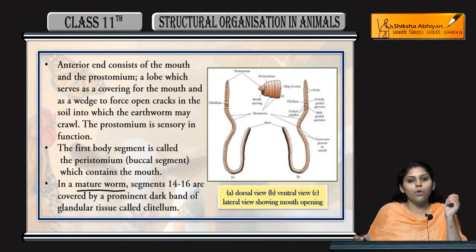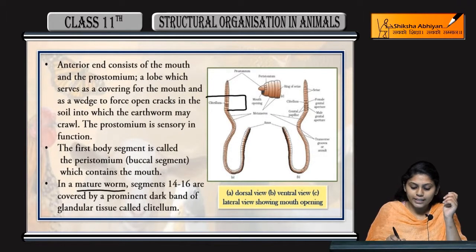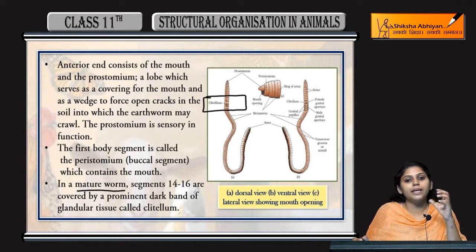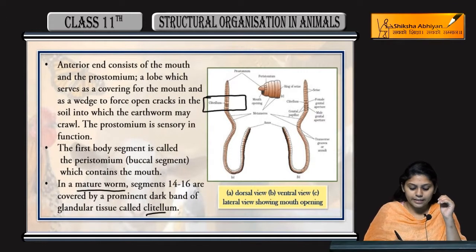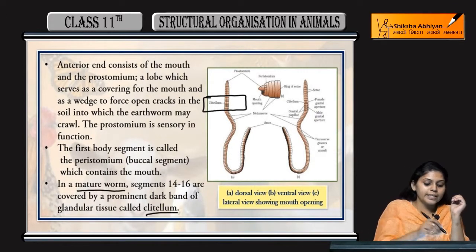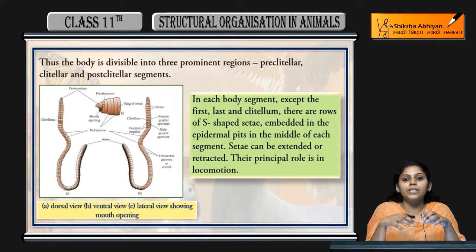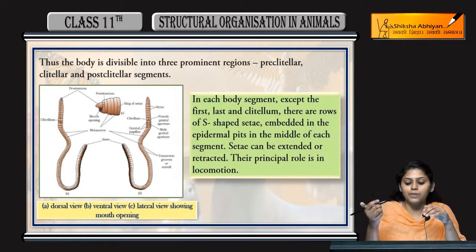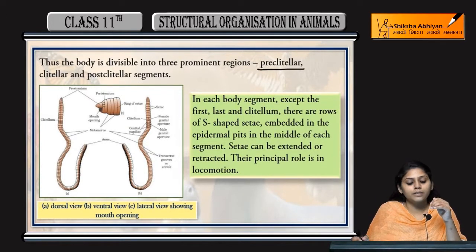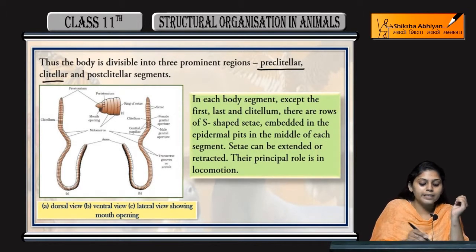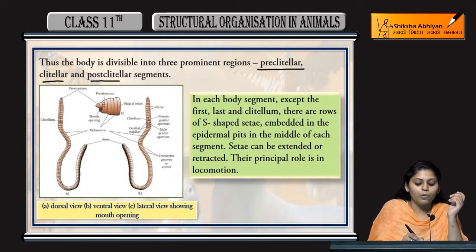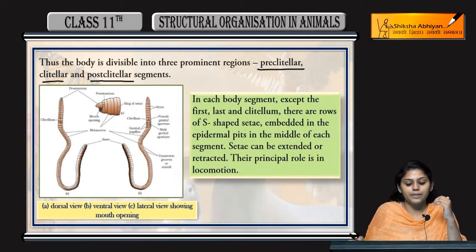Mature worm mein segment 14-16 mein present hota hai ek dark band that is known as clitellum. Iski presence ki wajah se body of earthworm is divisible into three parts: pre-clitellar, clitellar, and post-clitellar segments.